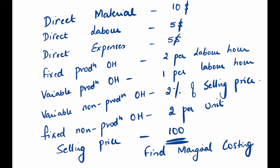Direct material — is it a fixed cost or a variable cost? It's a variable cost. Direct labour and direct expenses are again variable costs. Fixed production overheads are not going to be part of my marginal cost. Variable production overheads and variable non-production overheads at two percent of the selling price are included. Fixed non-production overheads will not be considered.